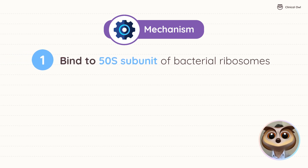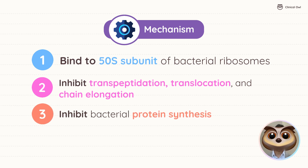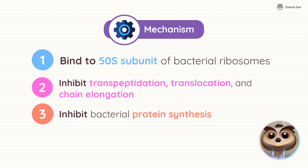The mechanism of action of macrolides involves binding to the 50S subunit of bacterial ribosomes, inhibiting crucial processes such as transpeptidation, translocation, and chain elongation, ultimately leading to the inhibition of bacterial protein synthesis. This action makes them particularly effective against bacteria that rely heavily on protein production for survival and replication.